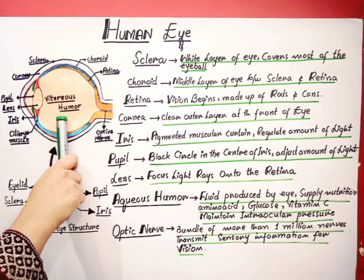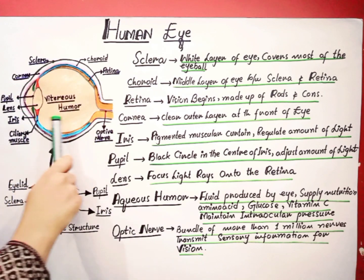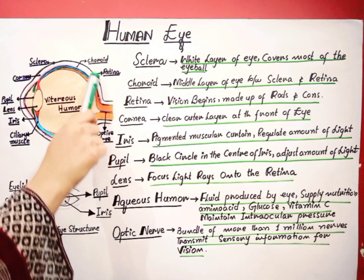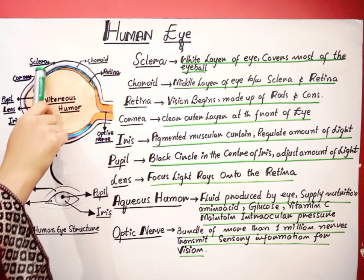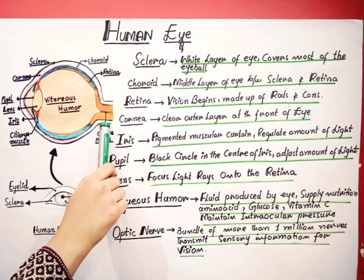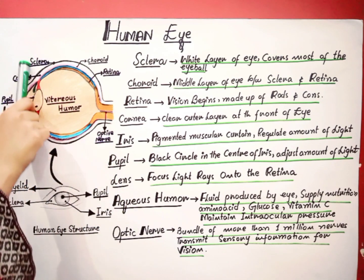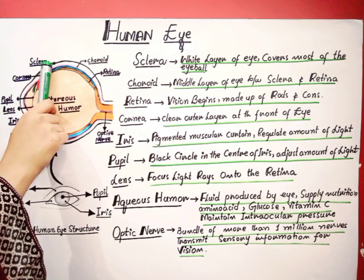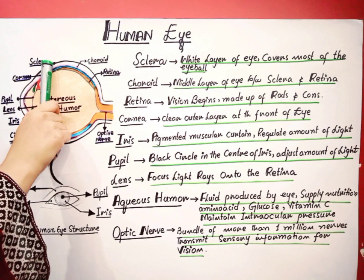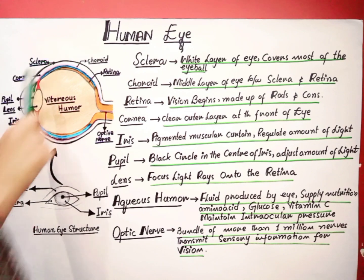The internal structure of our eye is here. Our eyes are made up of three important layers. The uppermost layer you can see here is called the sclera. The sclera is the white part of the eye and it provides support to the eyeball.